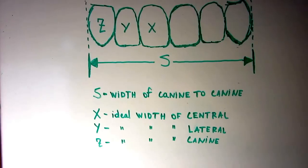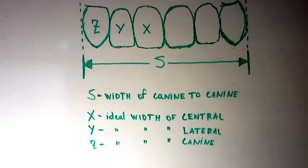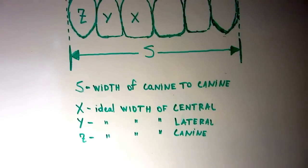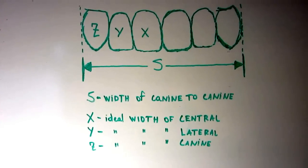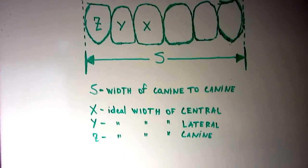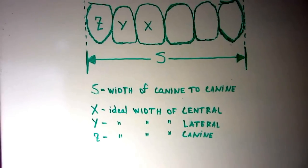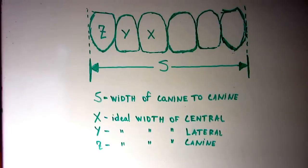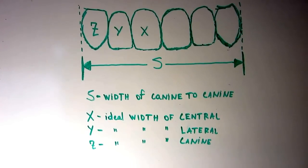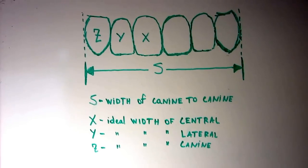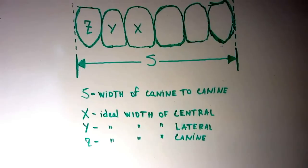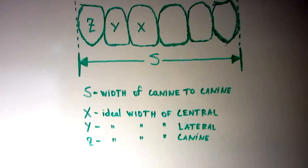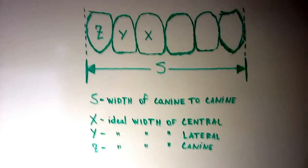based on that length, you can figure out what your ideal width of central, lateral, and canine teeth should be. This is based on the fact that your lateral incisor should ideally be 79% of the width of the central, and your canine should be 89% of the width of the central.